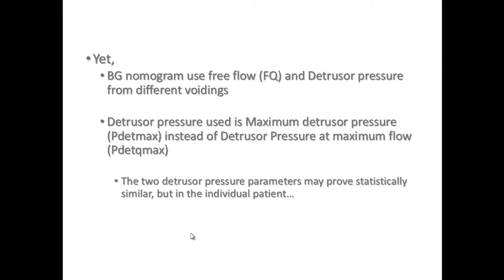With the Blaivas-Groutz approach, a free flow is measured during one voiding — measuring only flow — and then an intubated voiding is used to measure detrusor pressure. So the detrusor pressure and the flow are not measured in the same emptying phase, in the same voiding. For me, that is a flaw. Some others may think otherwise, but for me, that is a flaw.